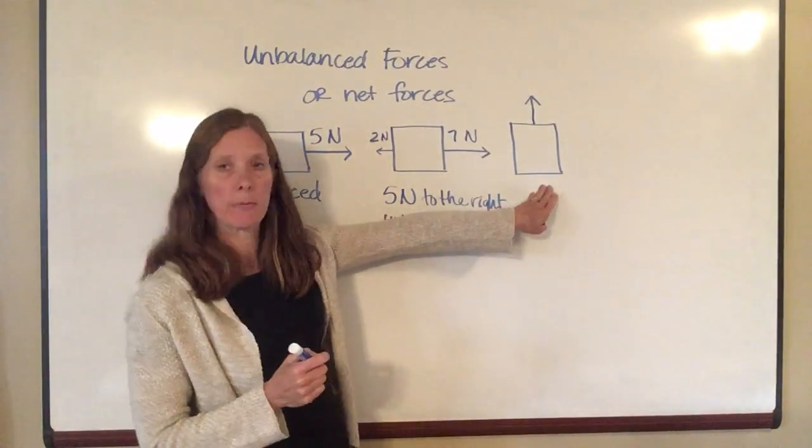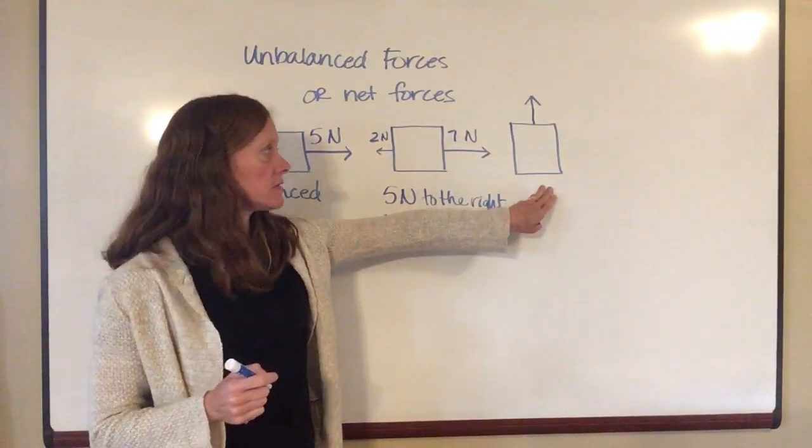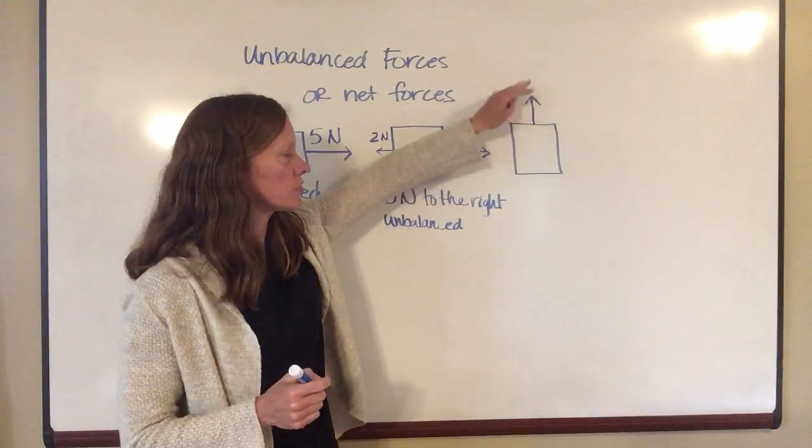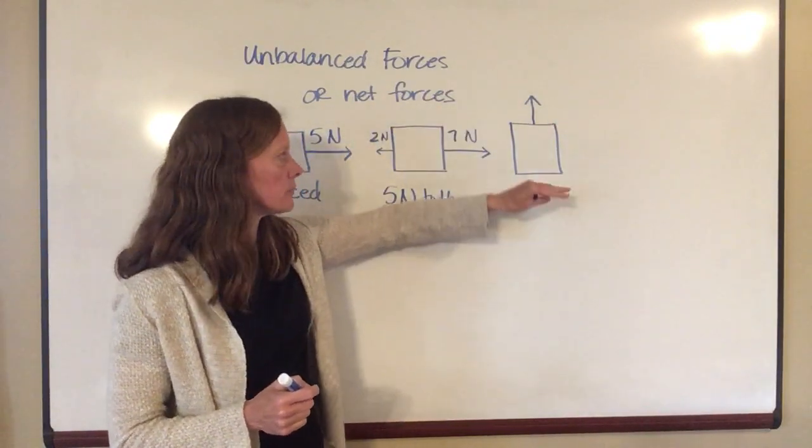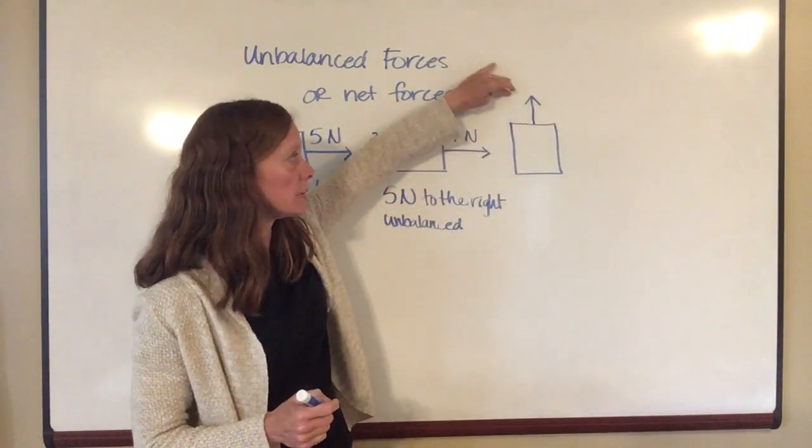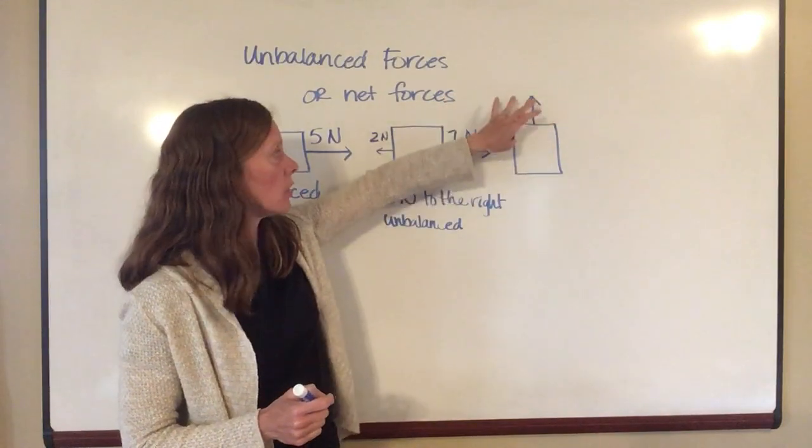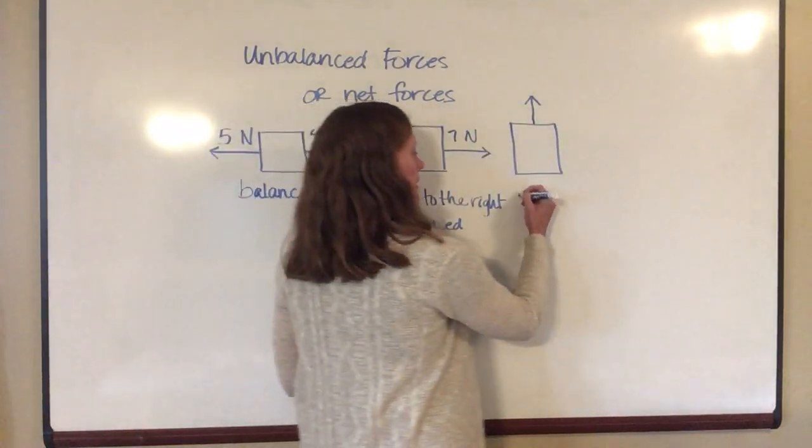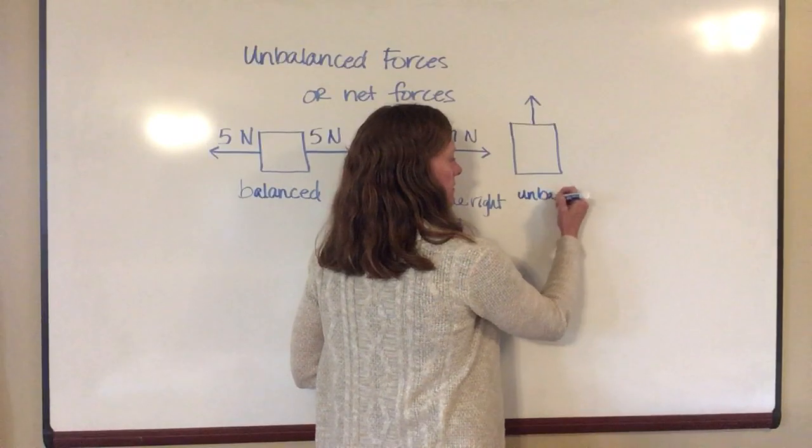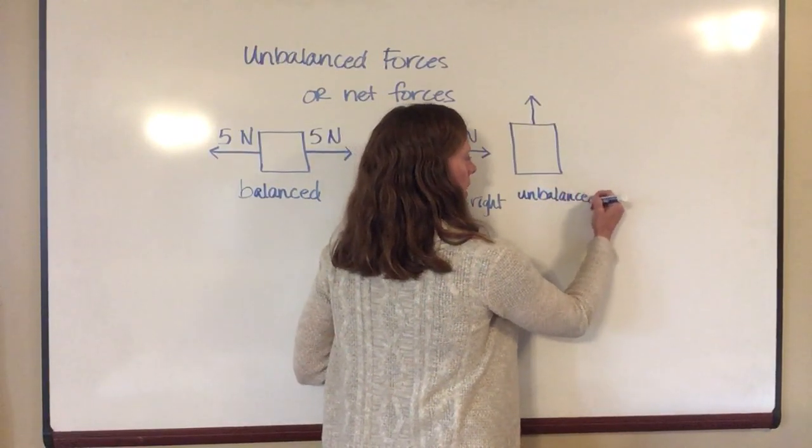Now this object is clearly unbalanced because there's only one force on it going one direction. There's nothing pulling down, there's nothing pulling to the left or right, it's only pulling up. So again, this one will be unbalanced because there's nothing to balance it on the other side.